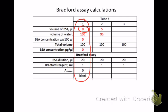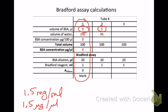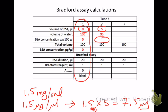At tube number two we've added five microliters of BSA. Remember that the stock of BSA that you had was 1.5 mg per ml, and that of course is the same as saying 1.5 micrograms per microliter. So to fill in the concentration here, I know that I used 5 microliters, and 1.5 times 5 is 7.5 micrograms because the microliters cancel out, so I end up with 7.5 micrograms.